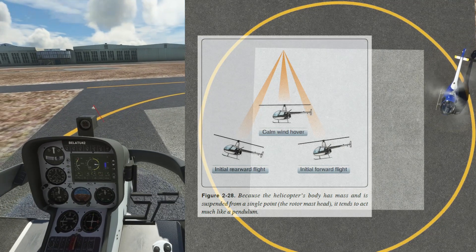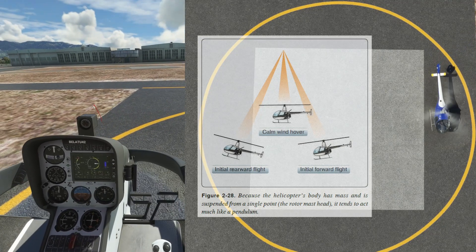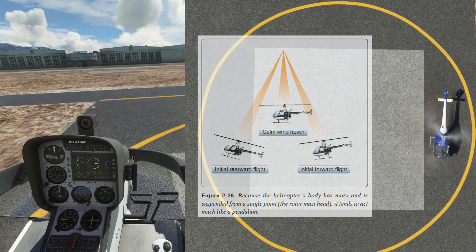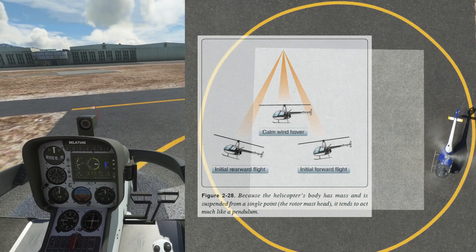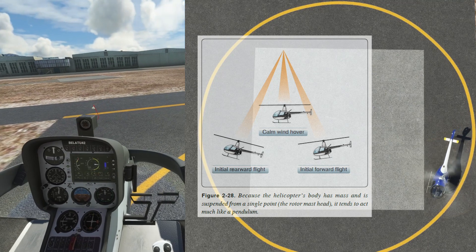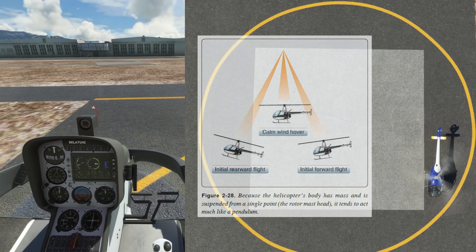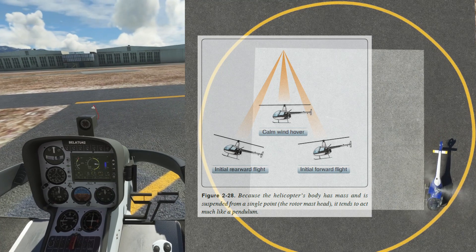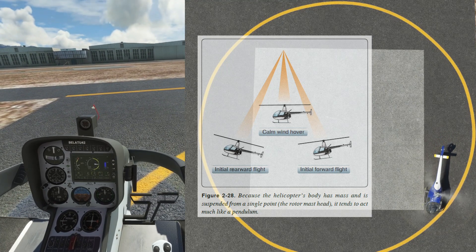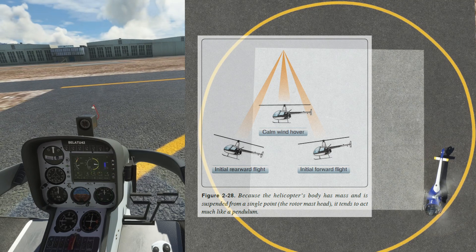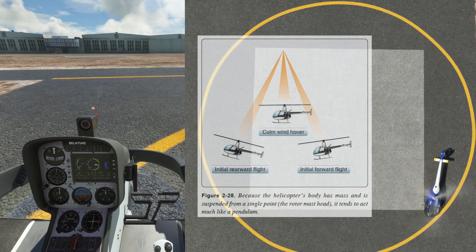The last concept to discuss briefly is pendular action and the delayed response. Because it's a single rotor helicopter, its mass is suspended from a single point location, so it acts as a pendulum. The helicopter reacts after the pendulum action occurs, so there's a little bit of a delayed response in the way that the helicopter reacts. You have to account for it, and you have to stay ahead of the aircraft.